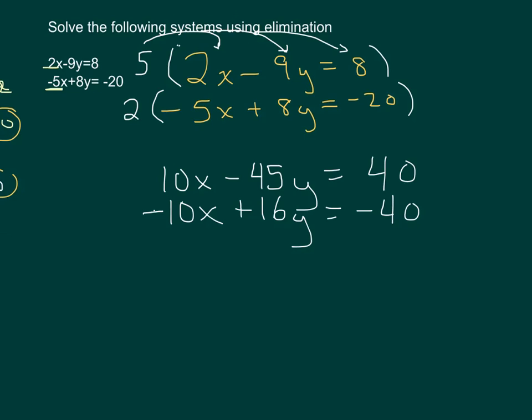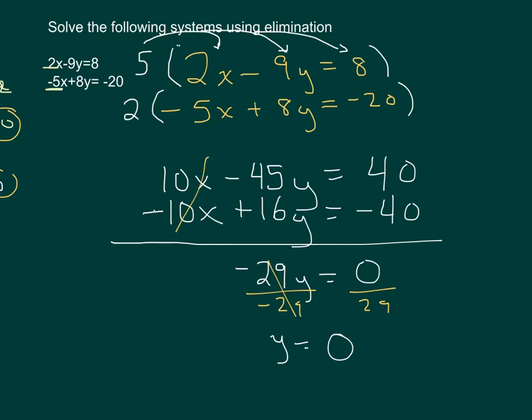Now you can tell you did this right because you see that our x's are going to eliminate. If after this step nothing eliminates, you know we made a mistake somewhere. So our x is going to eliminate. And now we have negative 45y plus 16y is negative 29y. And then 40 minus 40 is 0. And then divide both sides by negative 29. These cancel out. And we get y is equal to 0 divided by 29 is 0.